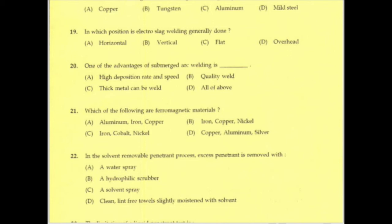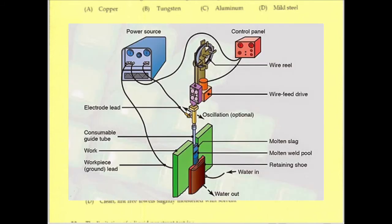In which position is electroslag welding generally done? The answer is the vertical position.